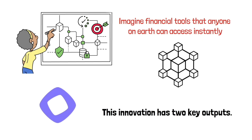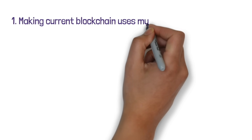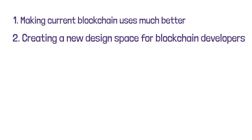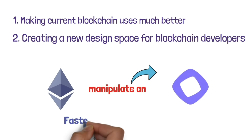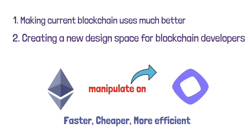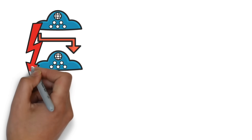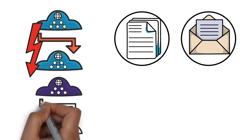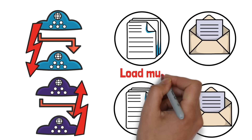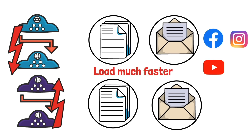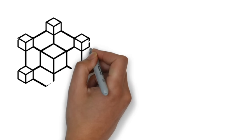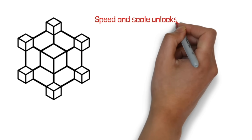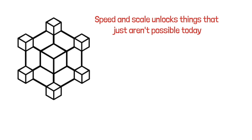This innovation has two key outputs. One, making current blockchain uses much better — every app that currently exists on Ethereum can be deployed on Monad in minutes, much faster, cheaper, and more efficient. Two, creating a new design space for blockchain developers. Think about it like the internet: when it was really slow, there were just webpages and email. When the internet got a thousand times faster, you still had email and webpages loading much faster, but you also got Facebook, Instagram, YouTube, TikTok, Netflix, and a whole bunch of other apps. That design space is what a hyper-fast and cheap blockchain will create.